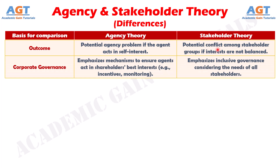Number seven: agency theory promotes control mechanisms to align agents' actions with shareholders' goals, while stakeholder theory advocates for inclusive governance practices.